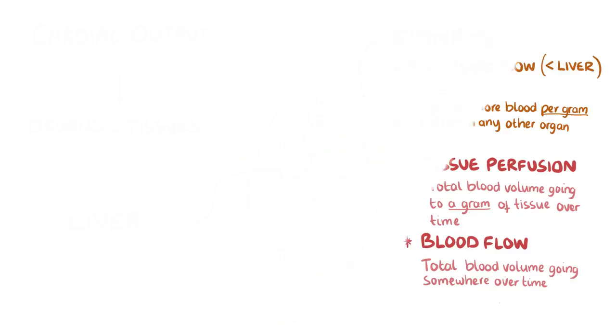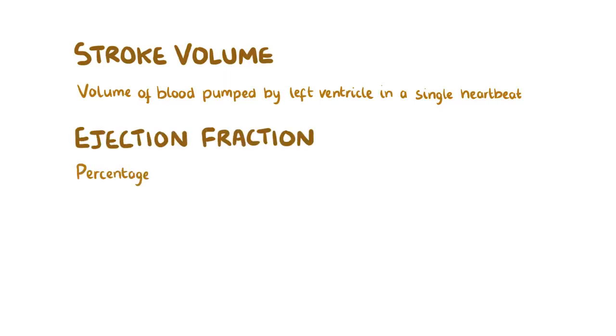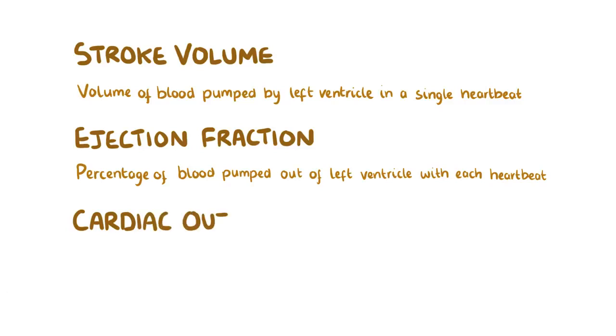Alright, so as a quick recap: stroke volume is the volume of blood that's pumped by the left ventricle in a single heartbeat. The ejection fraction is the percentage of blood that's pumped out of the left ventricle with each heartbeat, and this can serve as a measure of the heart's contractility. And finally, cardiac output is the volume of blood pumped out of the heart in one minute.